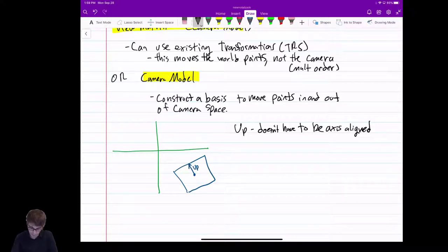It doesn't have to be axis aligned. And then we have another vector, which is orthogonal to this. It's because our basis needs orthogonal vectors, right? We call this perp, or perpendicular. So we have perp. This is some perpendicular vector.